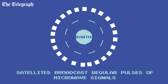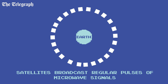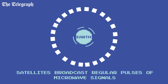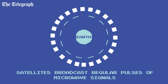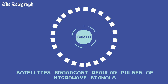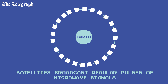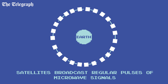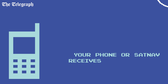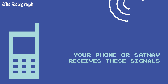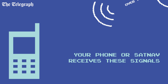Each of them is broadcasting regular pulses of microwave signals containing data about where the satellite is and the precise time the signal was transmitted. Your sat-nav, or phone, has a GPS receiving unit inside which detects these signals.